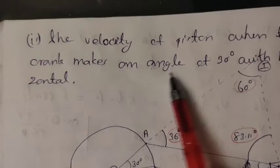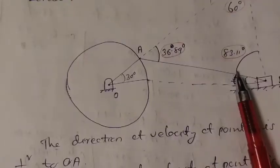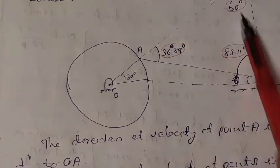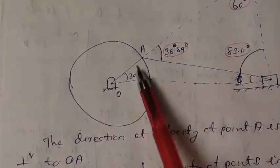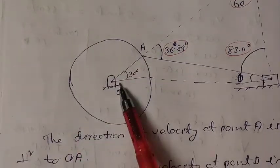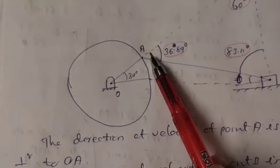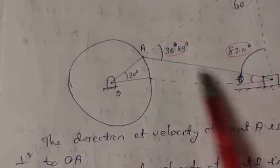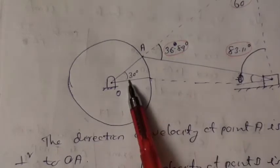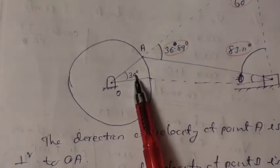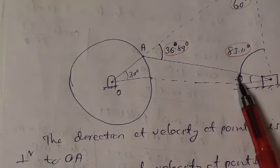The crank makes an angle of 30 degrees with the horizontal. Looking at the figure, the crank OA is 12 centimeters and the connecting rod AB is 50 centimeters. The angle given is 30 degrees.